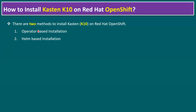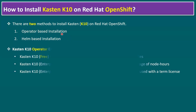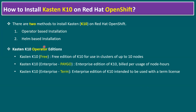In this session I'm mainly focusing on the first method — operator-based installation. When we look at the Kasten operator editions, there are three editions available: Kasten Free, and two enterprise editions. The enterprise PAYG model is a pay-as-you-go model, and the enterprise term-based model uses a term license. The free edition is for clusters up to 10 nodes only.